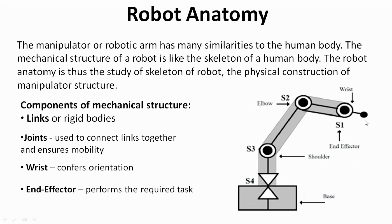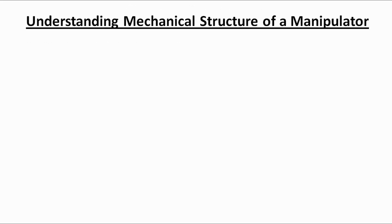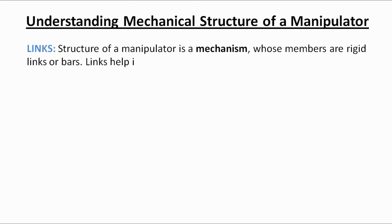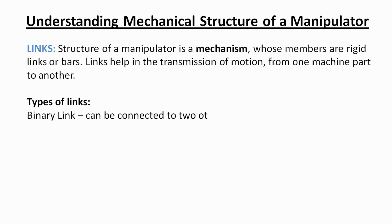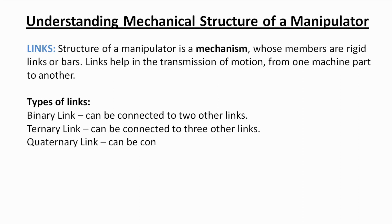Let us study the links in detail. As already discussed, links are the rigid bodies. These rigid bodies are joined together to make the structure of a manipulator. This structure in core mechanical terms is known as a mechanism. Links help in transmission of motion from one part to another. On the basis of the number of nodes, the links can be classified as binary links, ternary links, quaternary links, and so on.